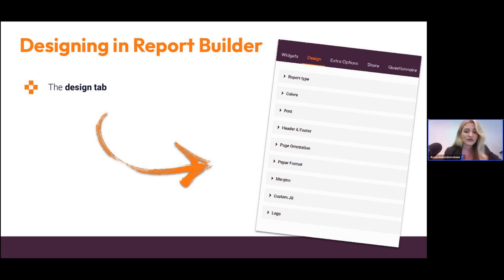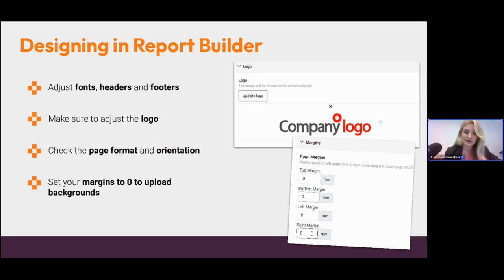Once you have that idea of what you'd like your report to look like, you can start creating it and click on the design tab. The design tab is not your primary tab in the report builder, but there are a few things you'd want to consider. This is where you adjust fonts, headers, and footers. Fonts are an important part of your design — you can choose from multiple fonts available on PointerPro, and there's also the possibility to upload custom fonts, including Google fonts.